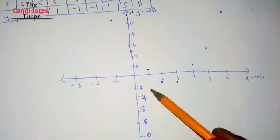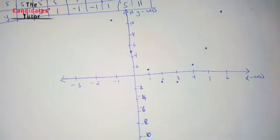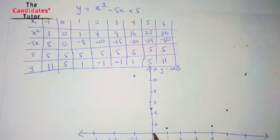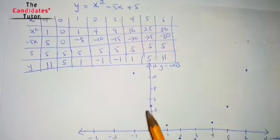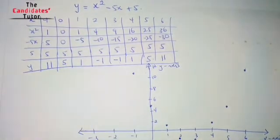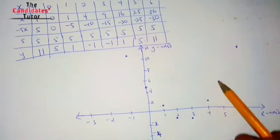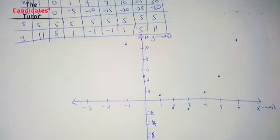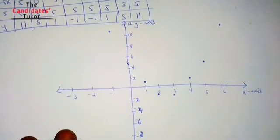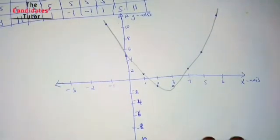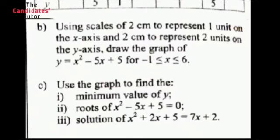A small correction was made: the y-axis scale should be every two centimeters for two units. The coordinates (0, 5), (1, 1), and (2, negative 1) are plotted accordingly. Now draw a smooth curve through all the points. It must be smooth — if it is not smooth, you will lose marks. This is just a sketch; on a proper graph sheet you will get an accurate result.